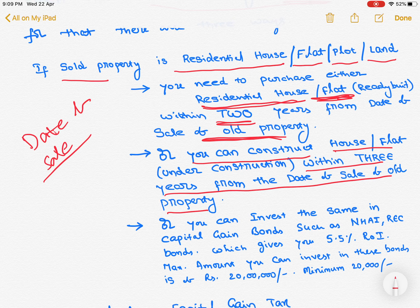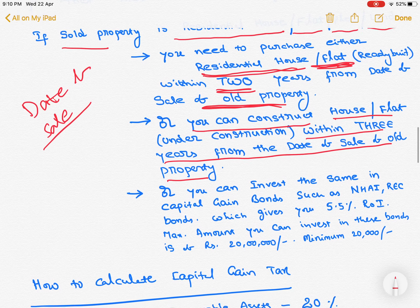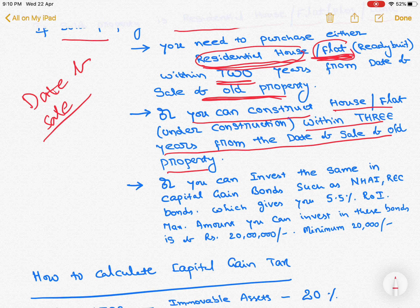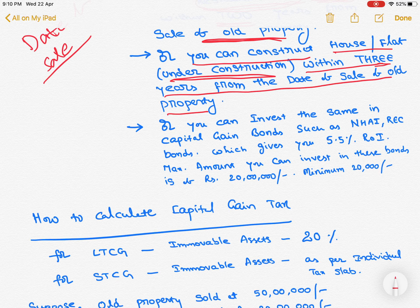Whatever amount you have earned — in this example, 50 lakhs — if you invest this 50 lakhs for the purchase of a residential house or flat within 2 years, then the tax can be avoided. Or if that amount is used for construction of a house or flat within 3 years from the date of sale. Alternatively, you can invest the same in NHAI or REEC — National Highway Authority of India bonds and REEC bonds. These are called capital gain bonds.